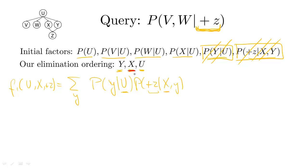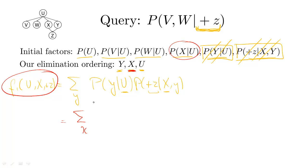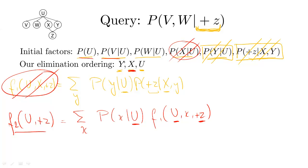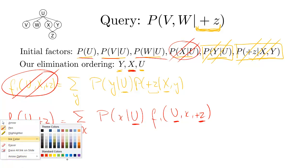Moving on to the elimination of X — X appears in P(X|U) and in F1(U, X, +Z). So joining over X means we sum over all instantiations of X the product of P(X|U) and F1(U, X, +Z). This gives us a new factor F2, which is over U and plus Z. In doing so, we got rid of the factors we joined to create F2.